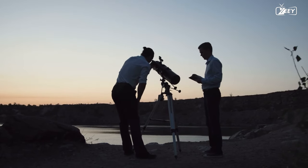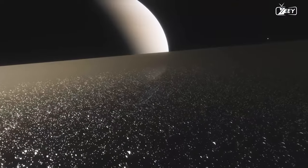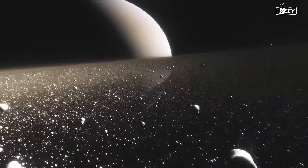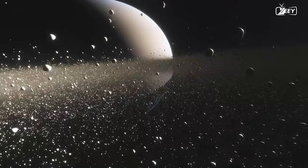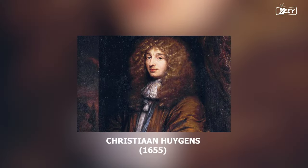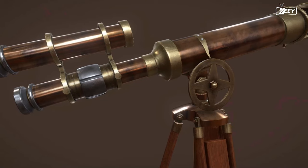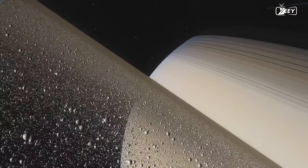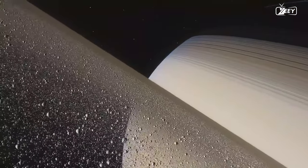The planet Saturn and its well-known belt of asteroids has long fascinated scientists. In 1655, the Dutch astronomer Christian Huygens observed Saturn's rings for the first time. Huygens was able to identify Saturn's principal ring with a rudimentary telescope, however it was not known at the time that it was a ring.